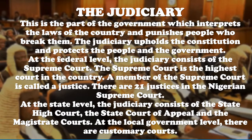The head of the Supreme Court is the Chief Justice. The federal judiciary also consists of the Federal High Court and the Federal Court of Appeal. At the state level, the judiciary consists of the State High Courts, the State Court of Appeal, and the Magistrates Courts. At the local level, there are Customary Courts, which are the lowest courts in Nigeria. In northern Nigeria, this includes the Sharia Courts.